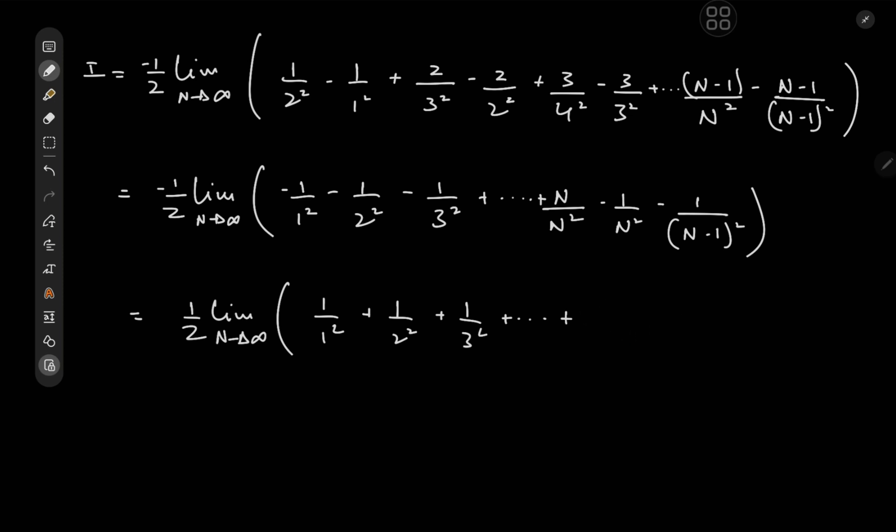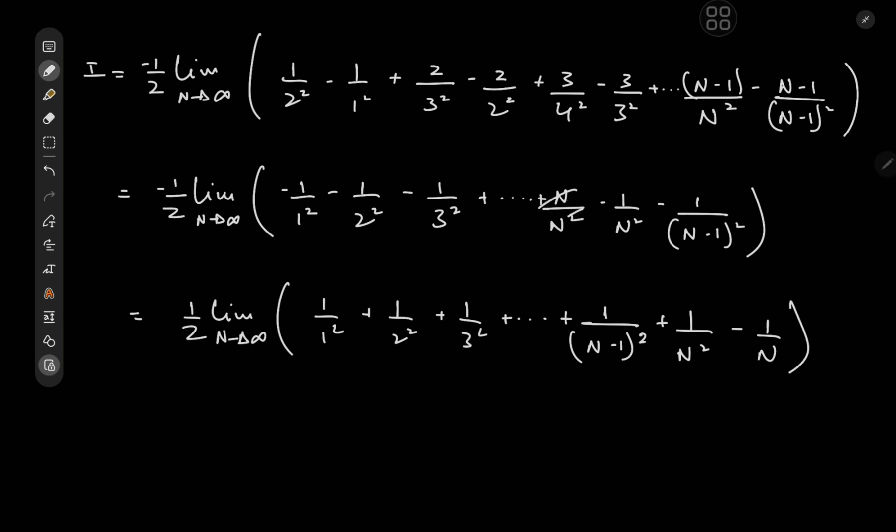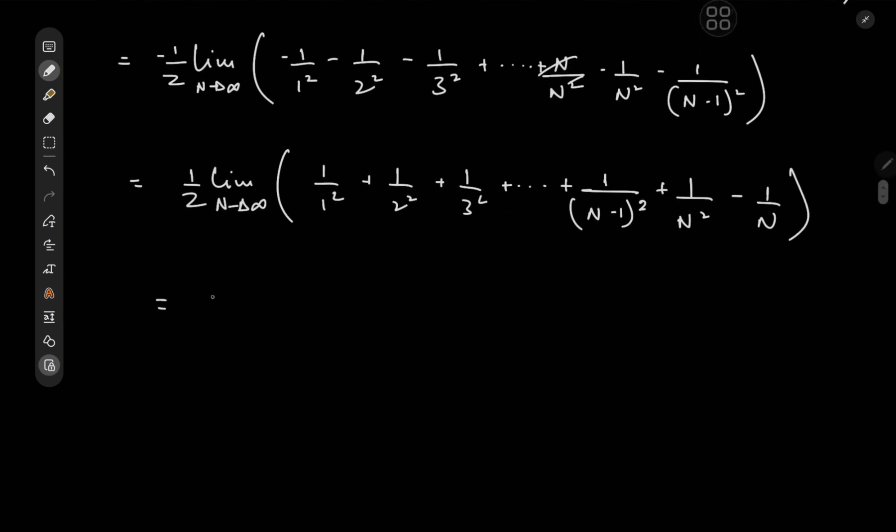Then we also have, wait a minute, wait a minute, we have 1 over n minus 1 squared. And we have 1 over n squared, and we have this minus 1 over n term from here, which looks pretty cool because now we can write this as 1 half times the limit as n goes to infinity of the sum over k from 1 to n of 1 over k squared minus 1 over n.